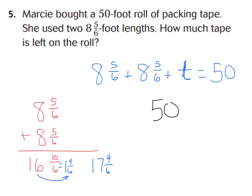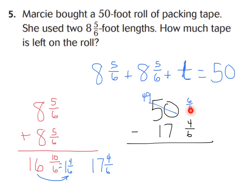So let's do fifty wholes minus seventeen and four-sixths. When you subtract with fractions, never just drop your four-sixths down — you have to subtract it. If there's no fraction to subtract from, you have to make one. So we make six-sixths and turn fifty into forty-nine. Forty-nine and six-sixths still has a value of fifty. Now: six-sixths minus four-sixths is two-sixths, and forty-nine minus seventeen is thirty-two. So we have thirty-two and two-sixths, better known as thirty-two and one-third feet of tape left on the roll.